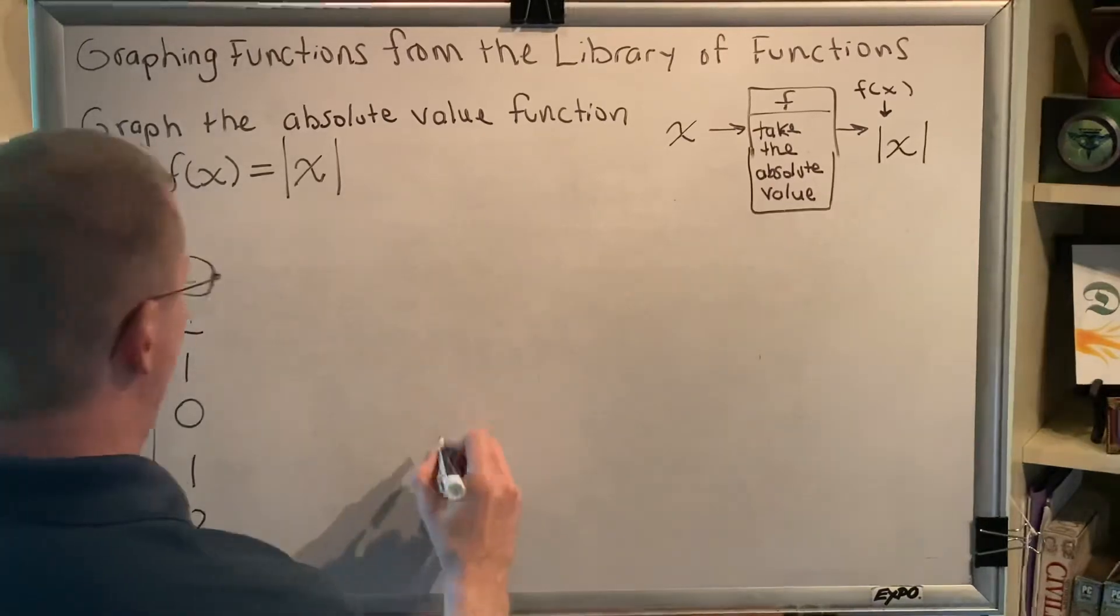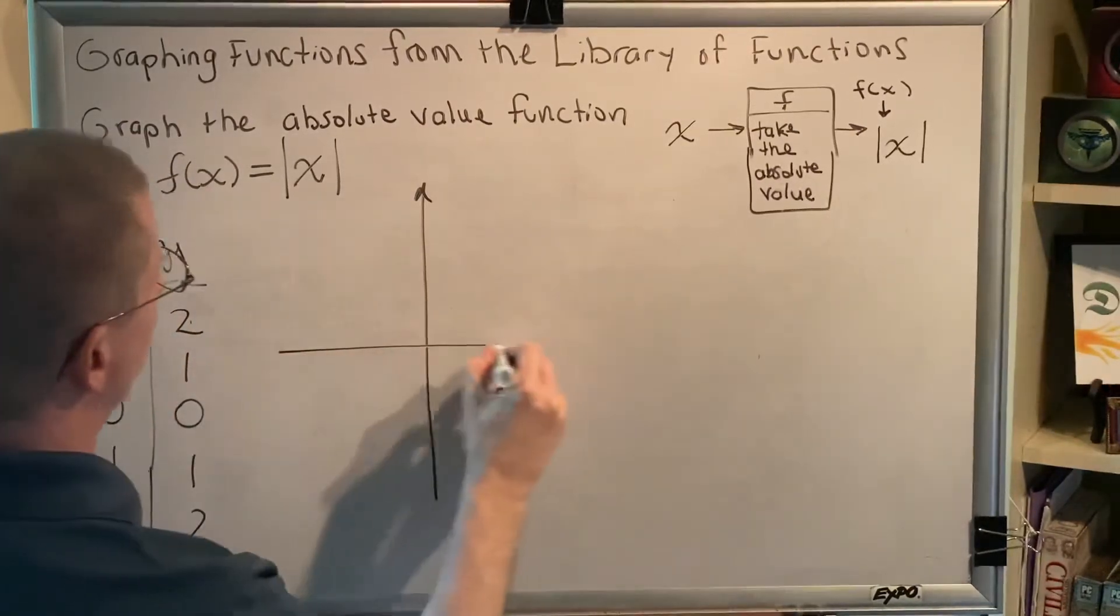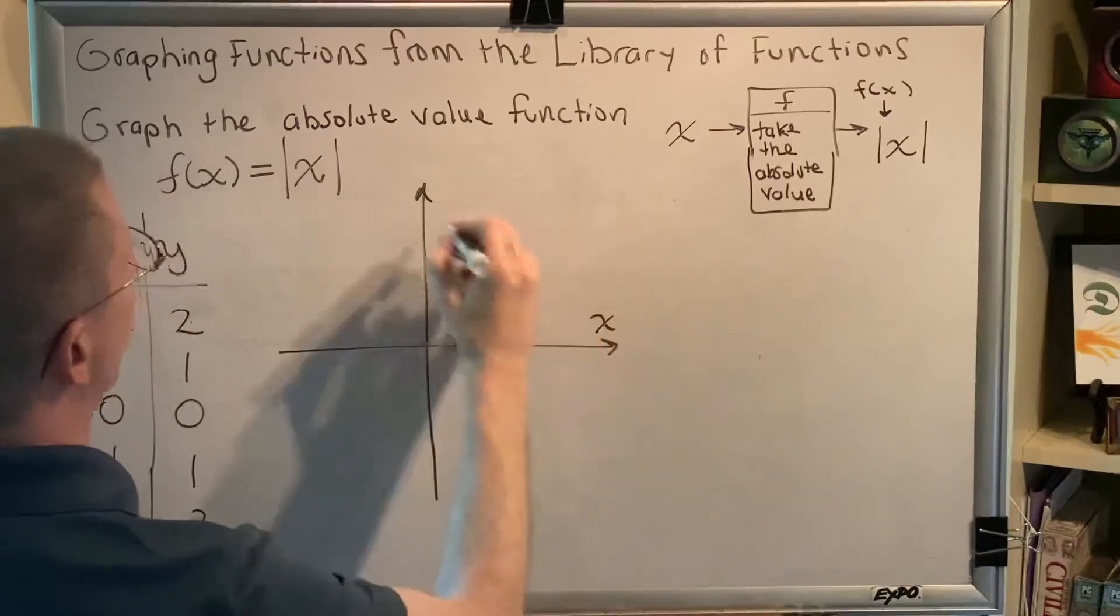Alright, so now we're going to create the graph that goes with these five points. We're going to get a v-shape for this particular graph.